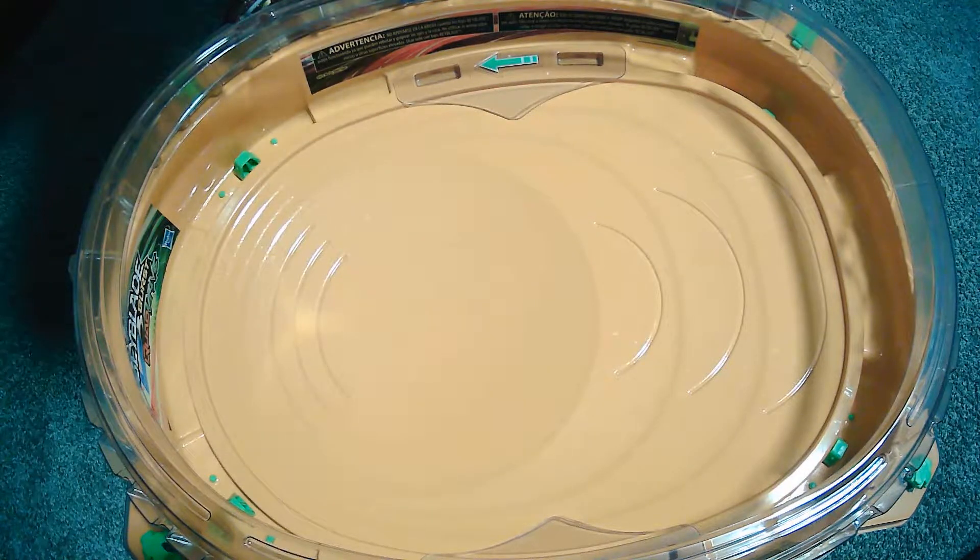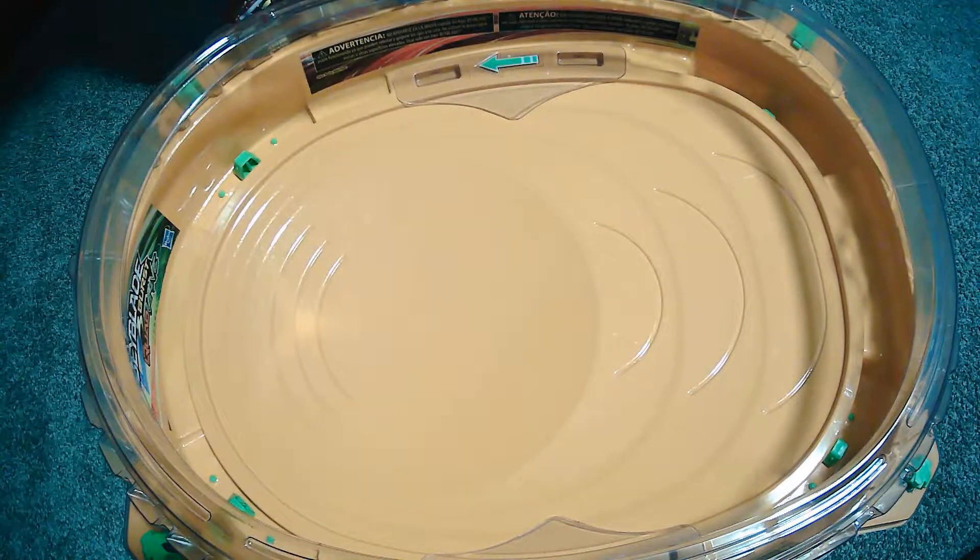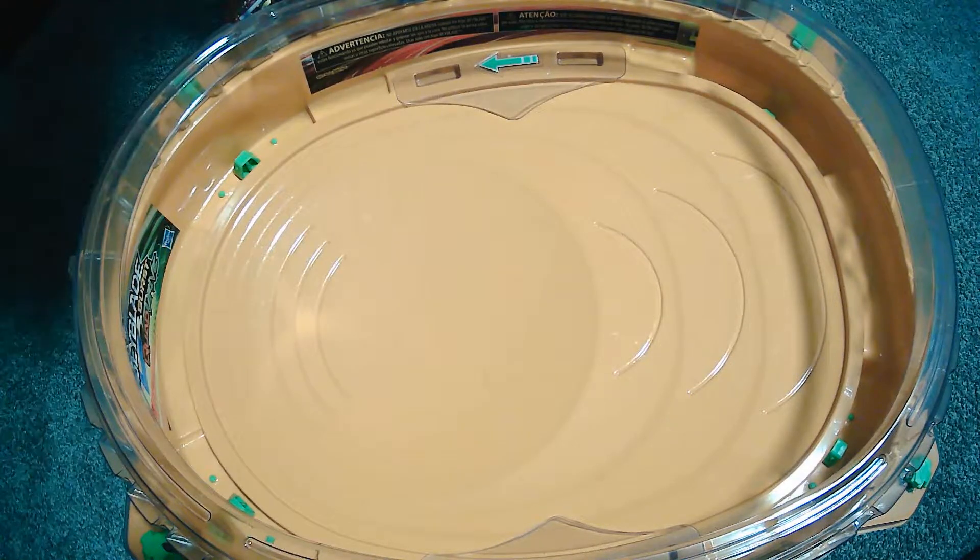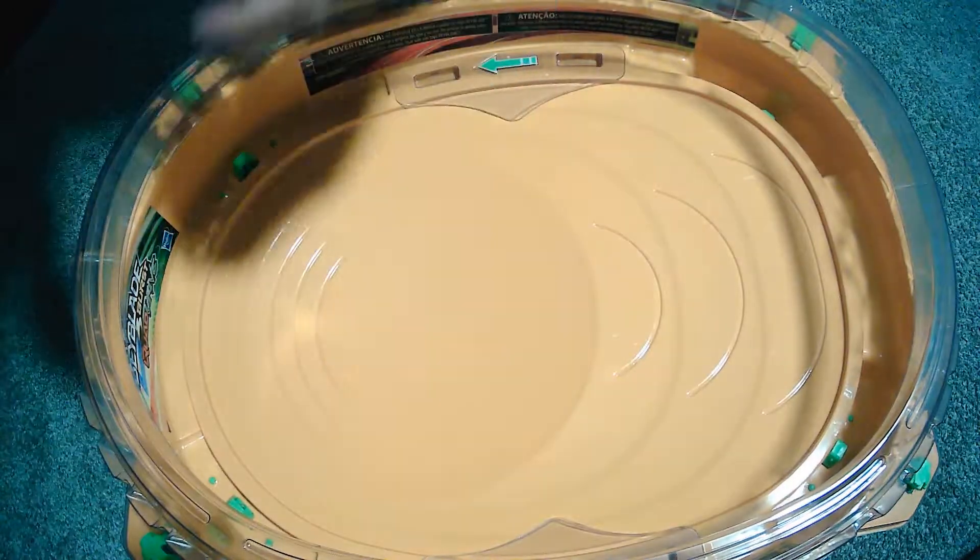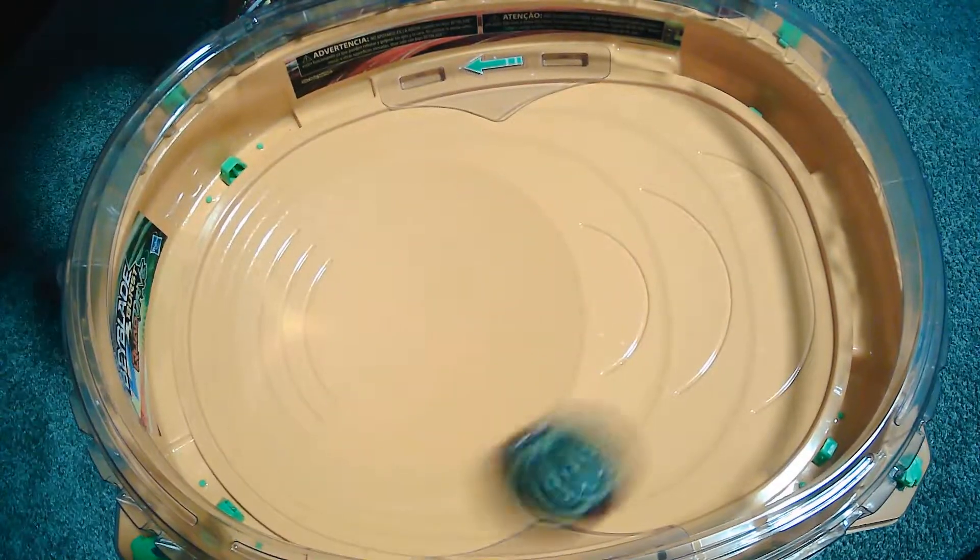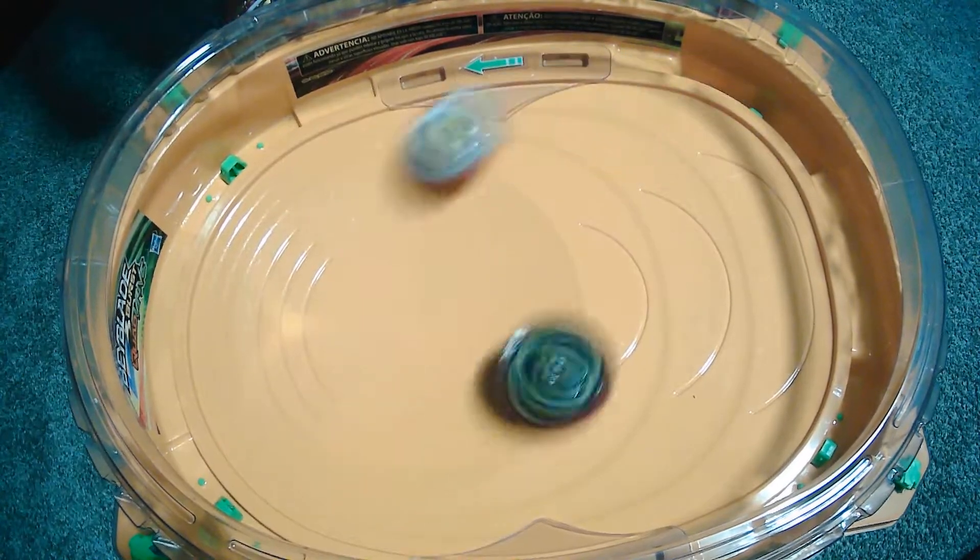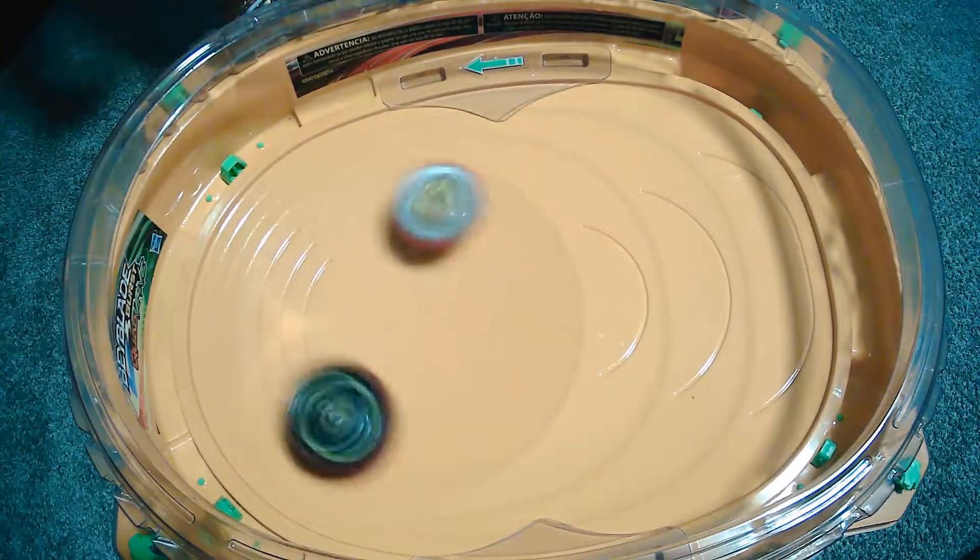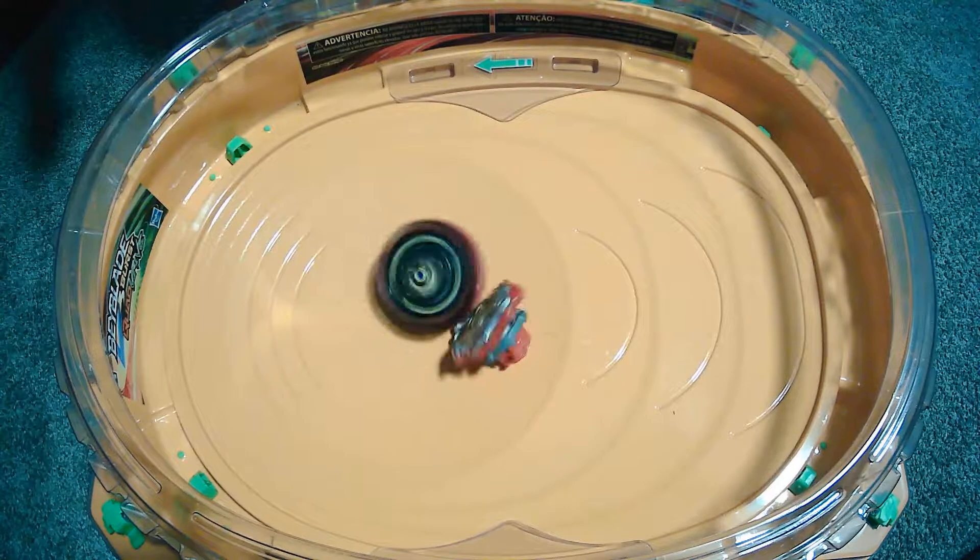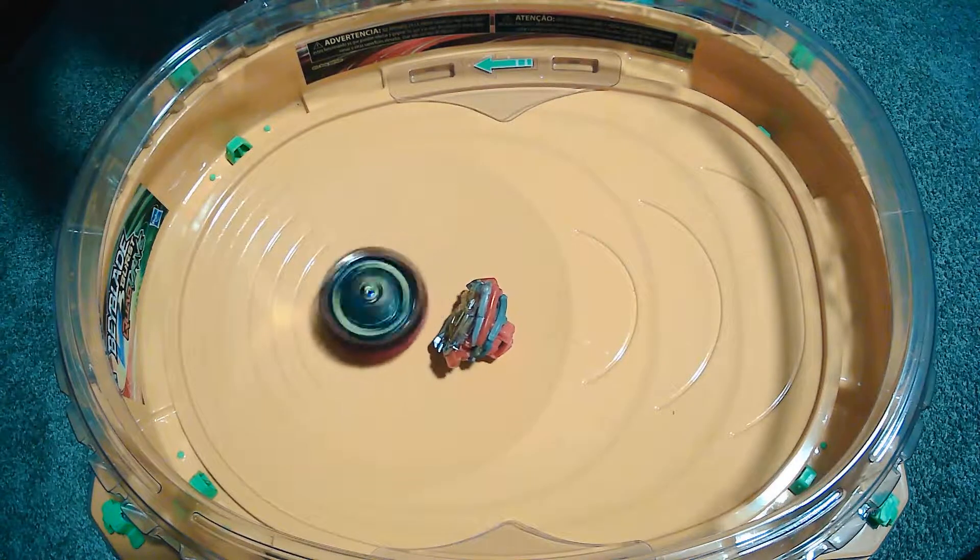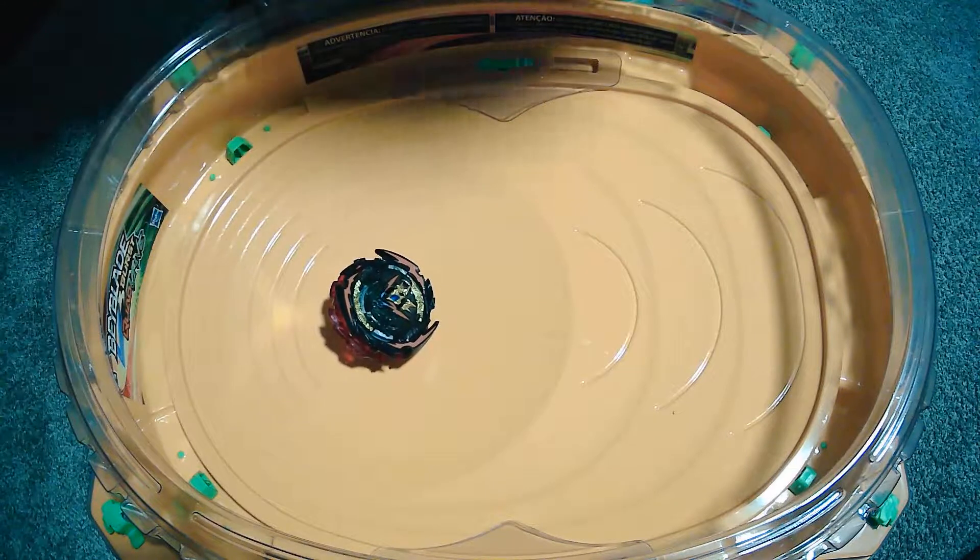Okay, first we're going to start off with Z Achilles, probably one of the worst Beyblades out there, but we'll see what happens. Thanks to the S gear. I'm not sure it has extra attack power, but it defeated one Beyblade, now we're going to move on to the next one.